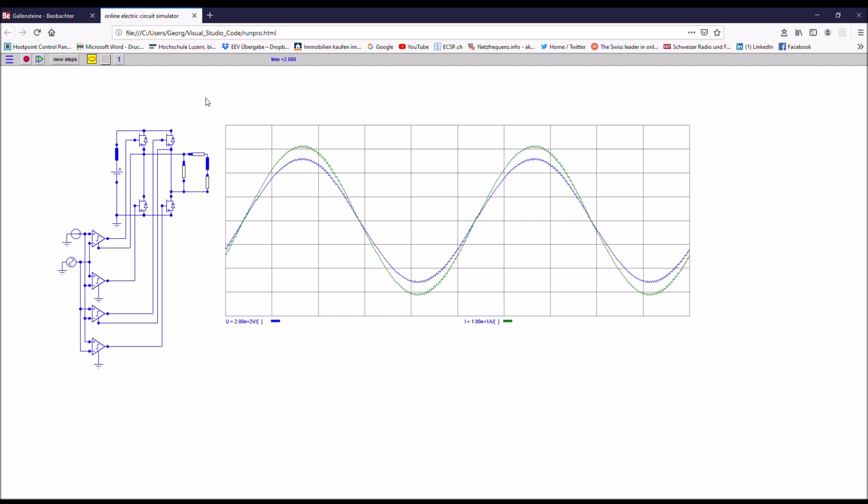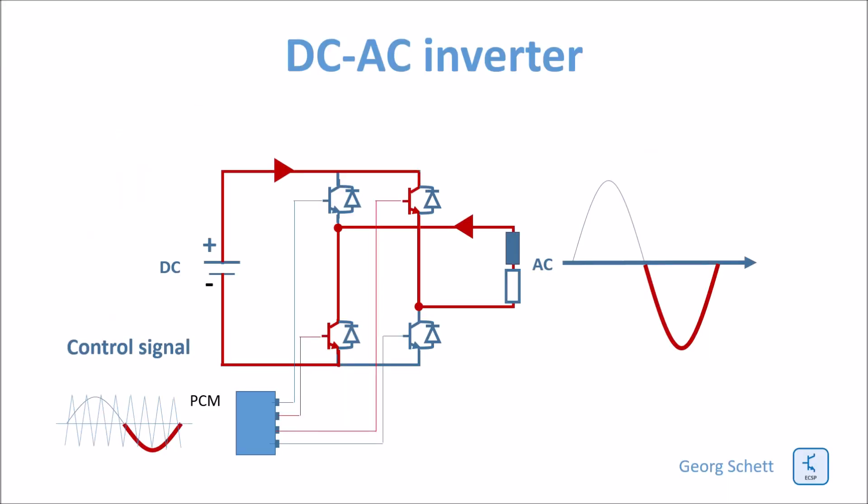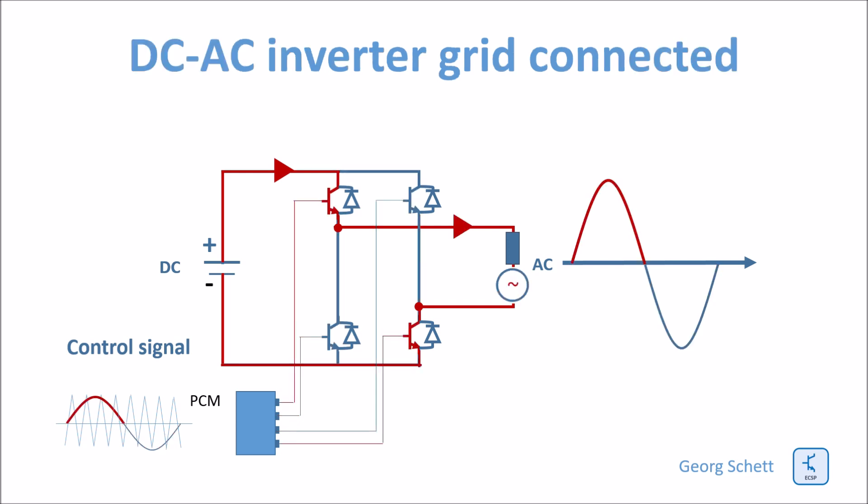Here you can see how the voltage across the resistance looks like. Instead of a passive load only, I want to connect now my inverter to a grid and I want to see how I can charge and discharge a storage unit.